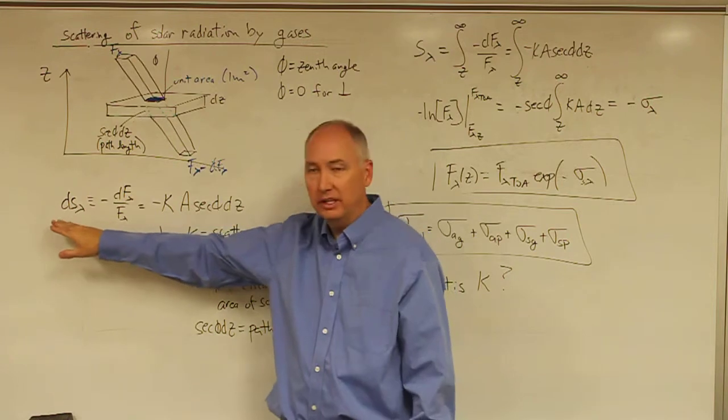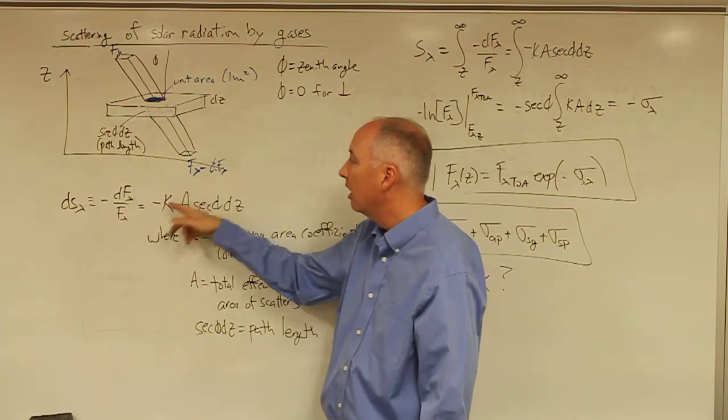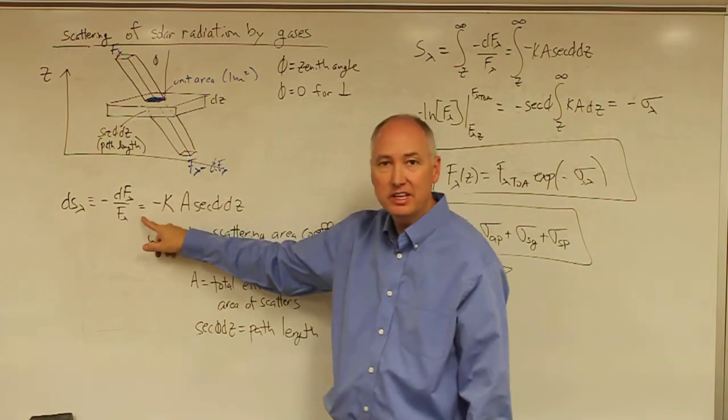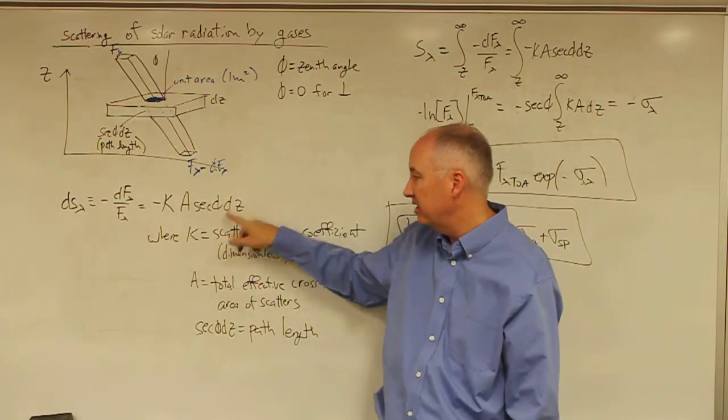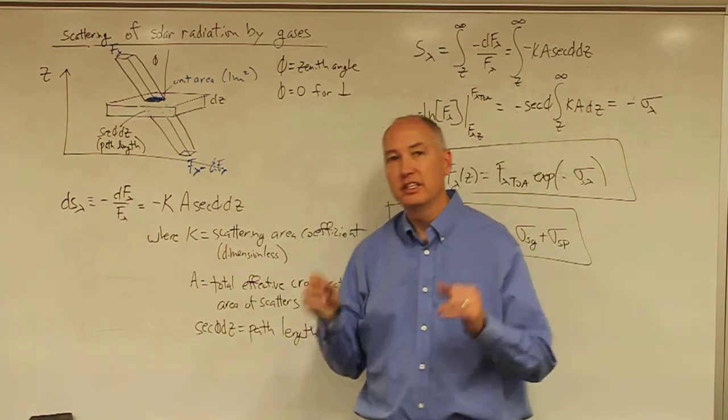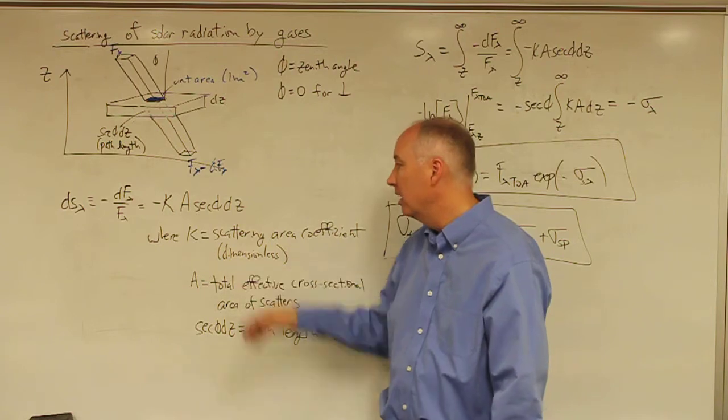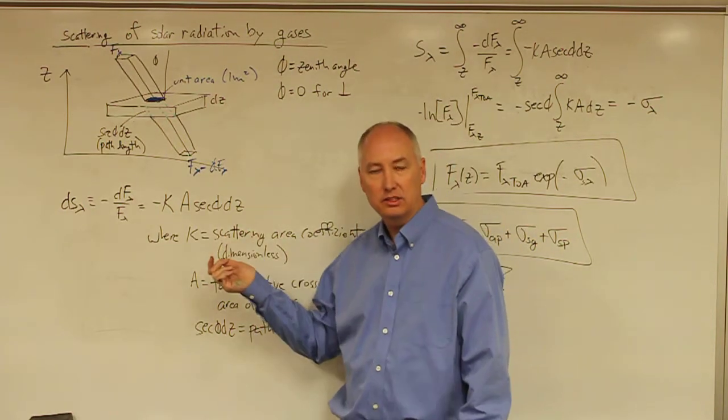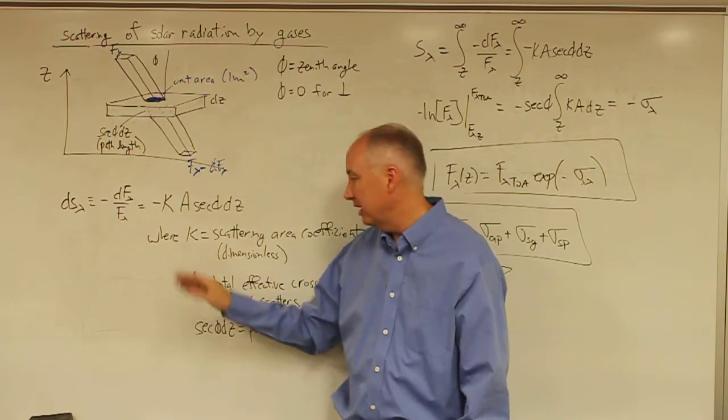And so, in this case, the incremental change in the scattering is equal to minus dF over F. In this case, it's going to be equal to minus K times A times the secant phi dZ. And where K is a scattering area coefficient and it's a dimensionless parameter, it's going to be quite complex to explain. We're going to have our own lecture on how to calculate K.